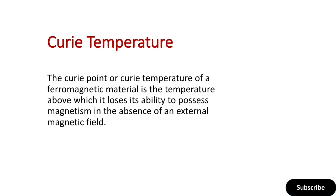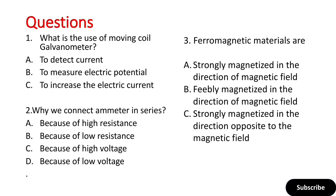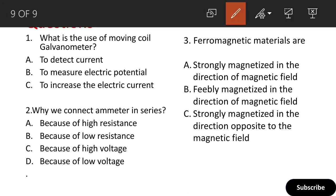These are some important topics for today. Now let's see some questions. What is the use of a moving coil galvanometer? Options: to detect current, to measure electric potential, or to increase electric current. The correct answer is: to detect current.